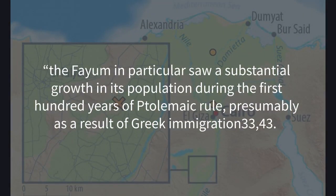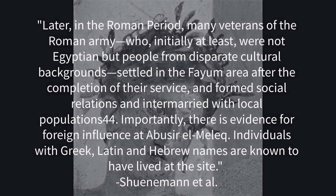The Fayyum in particular saw substantial population growth during the first hundred years of Ptolemaic rule, presumably as a result of Greek immigration. Later in the Roman period, many veterans of the Roman army — initially not Egyptian but people from disparate cultural backgrounds — settled in the Fayyum area after completing their service, and formed social relations and intermarried with local populations. Importantly, there is evidence for foreign influence at Abusir el-Melek: individuals with Greek, Latin, and Hebrew names are known to have lived at the site.